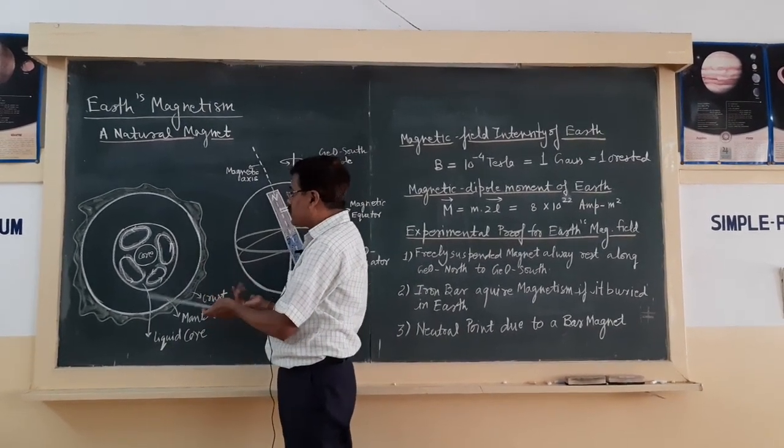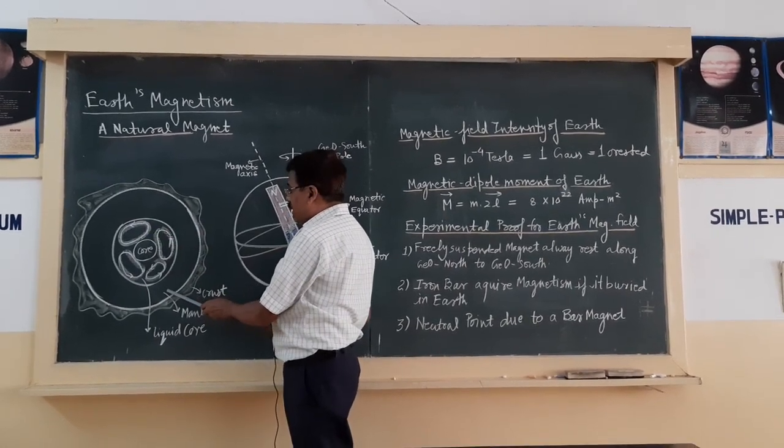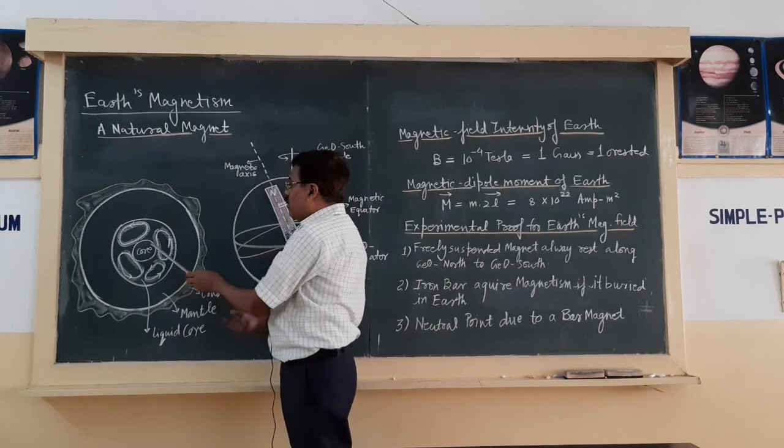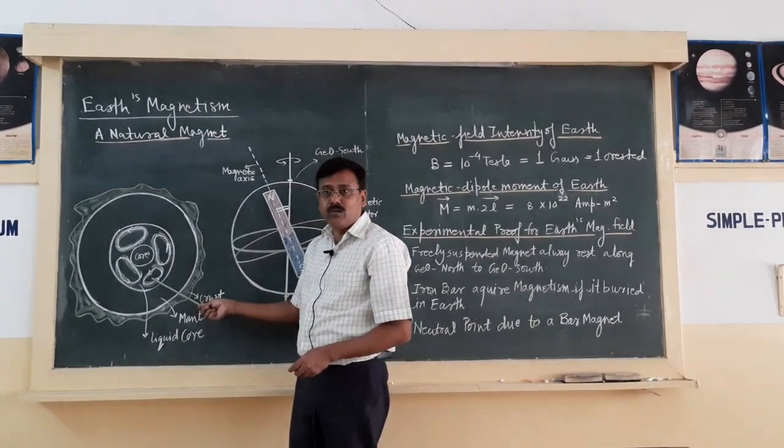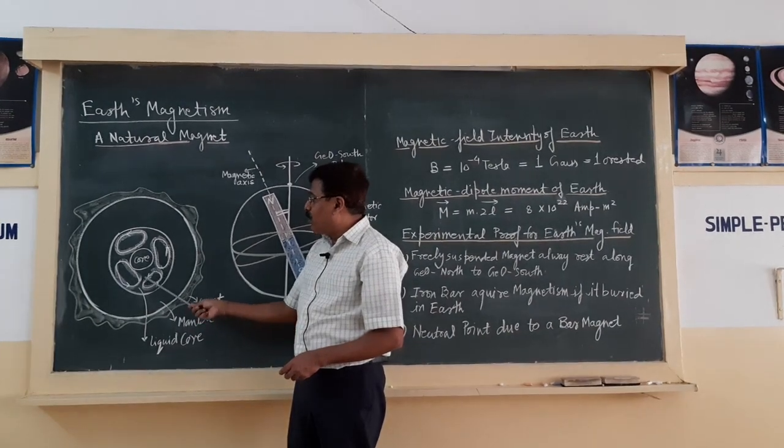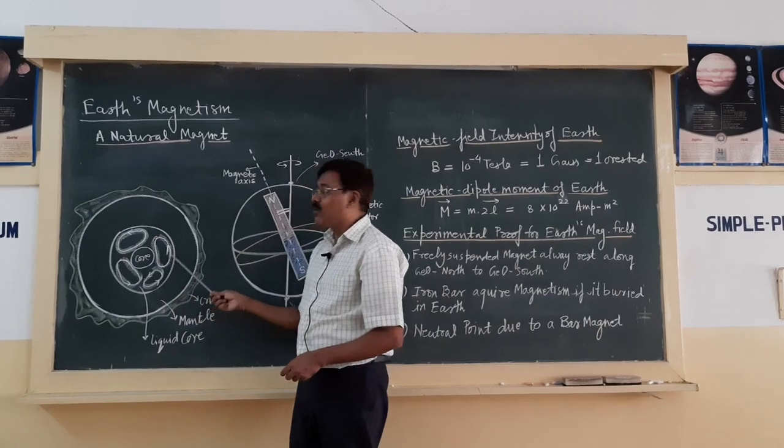Because our earth's construction, as you already know - our earth consists of crust, then mantle region, then core. The core has two parts: solid core and liquid core. In the liquid core, the molten state of material - nickel, iron, cobalt - continuously circulates.